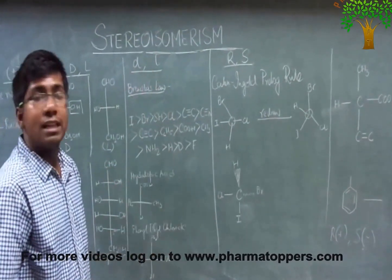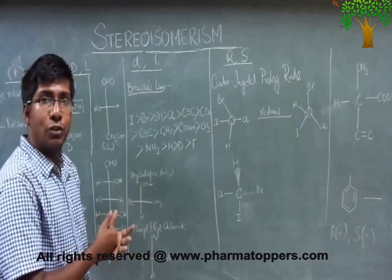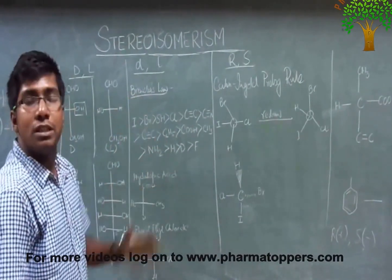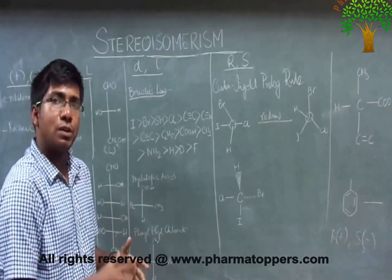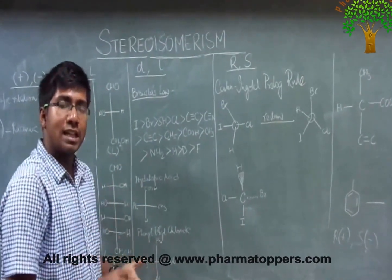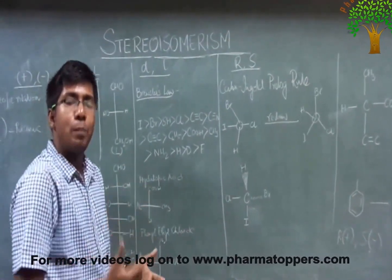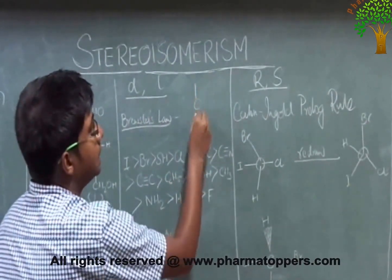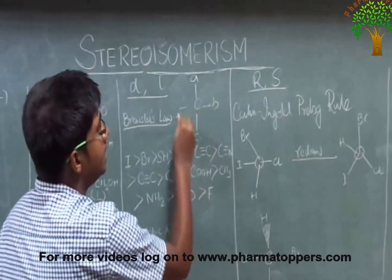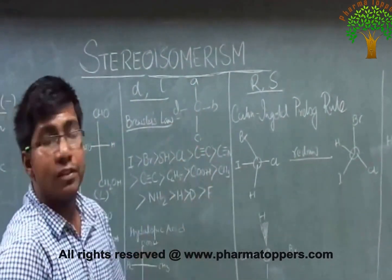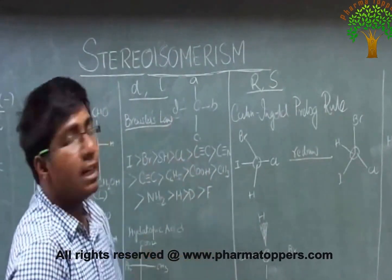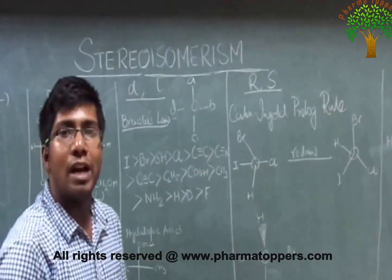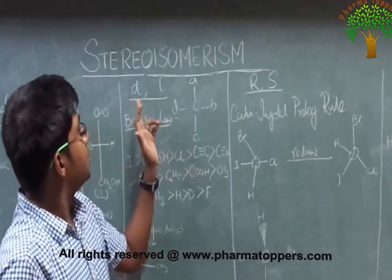Now we come to small d and small l. Small d and small l stands for dextrorotatory and levorotatory. This is based on the asymmetric distribution of atoms around a single chiral center, which creates a screw pattern of polarizability. Suppose we have a carbon connected to groups A, B, C, and D — each having a different polarity. When plane polarized light is passed through this compound, it exhibits the screw pattern of polarizability, giving rise to d and l.